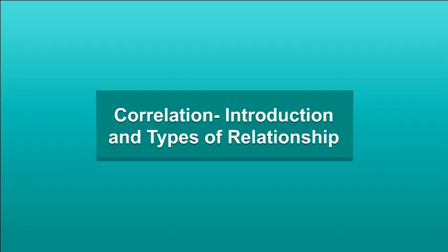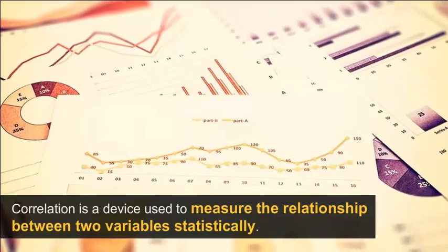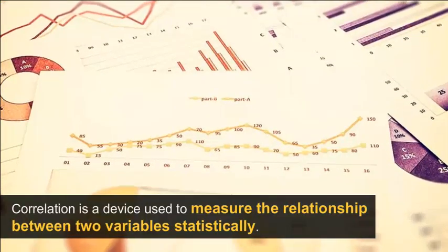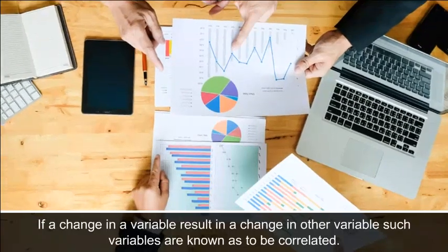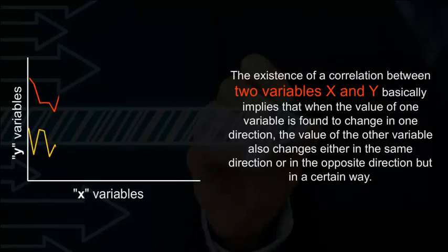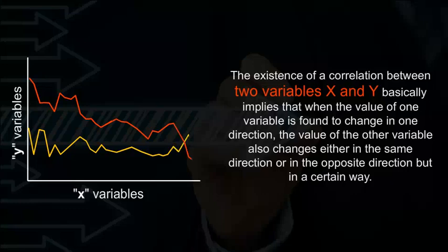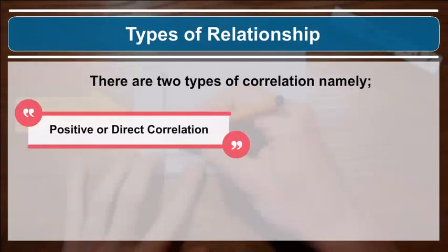Correlation: Introduction and Types of Relationship. Correlation is a device used to measure the relationship between two variables statistically. If a change in one variable results in a change in the other variable, such variables are known to be correlated. The existence of a correlation between two variables X and Y implies that when the value of one variable changes in one direction, the value of the other variable also changes either in the same direction or in the opposite direction, but in a certain way.